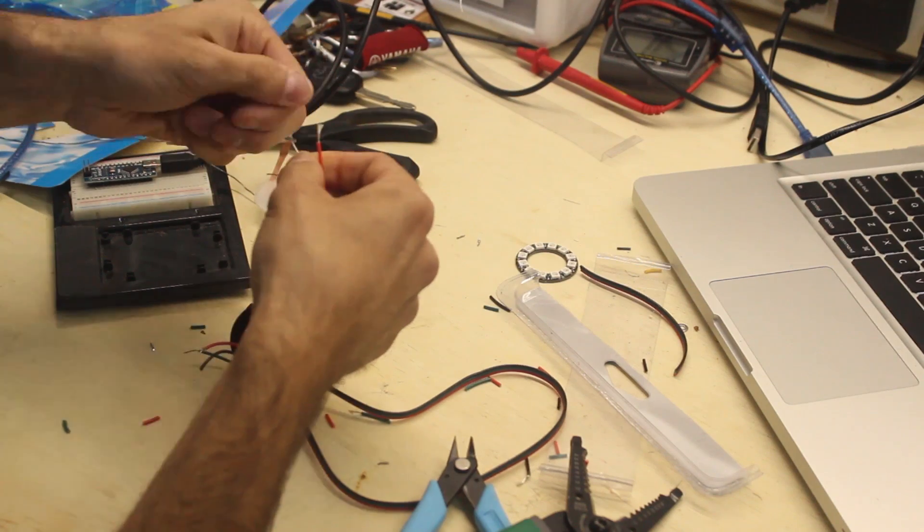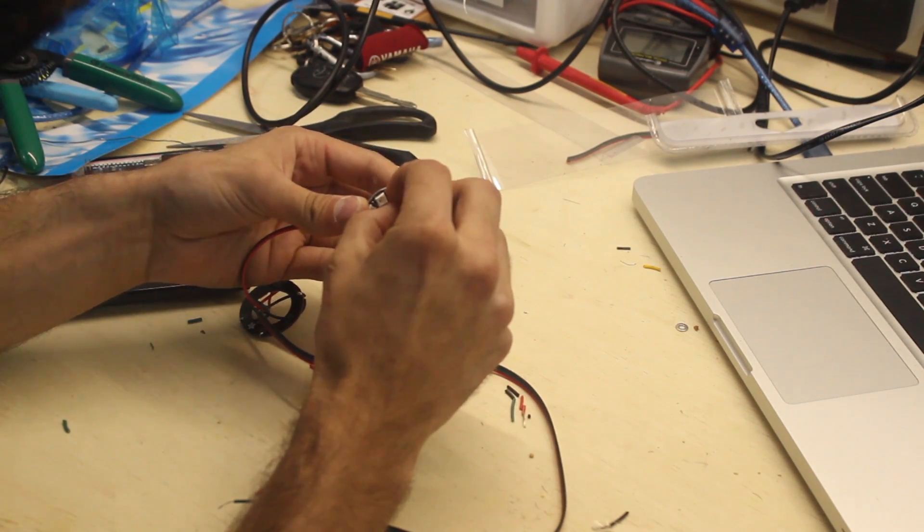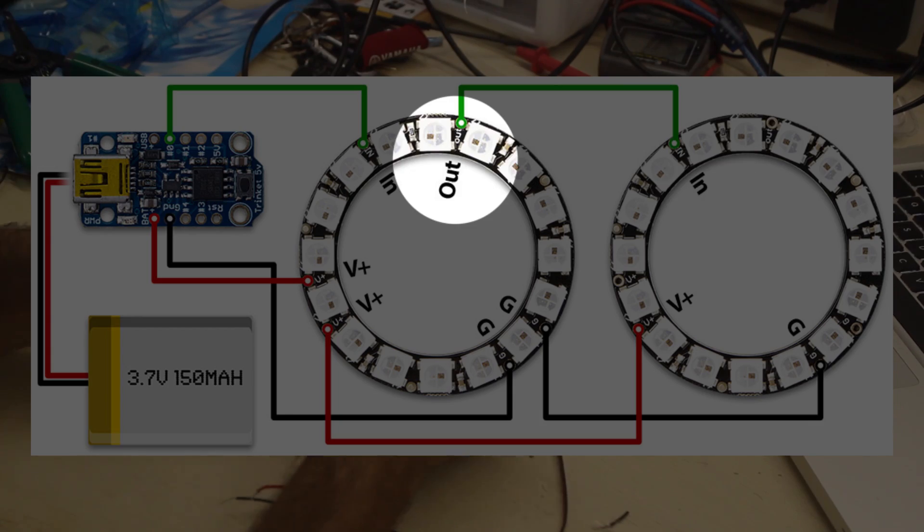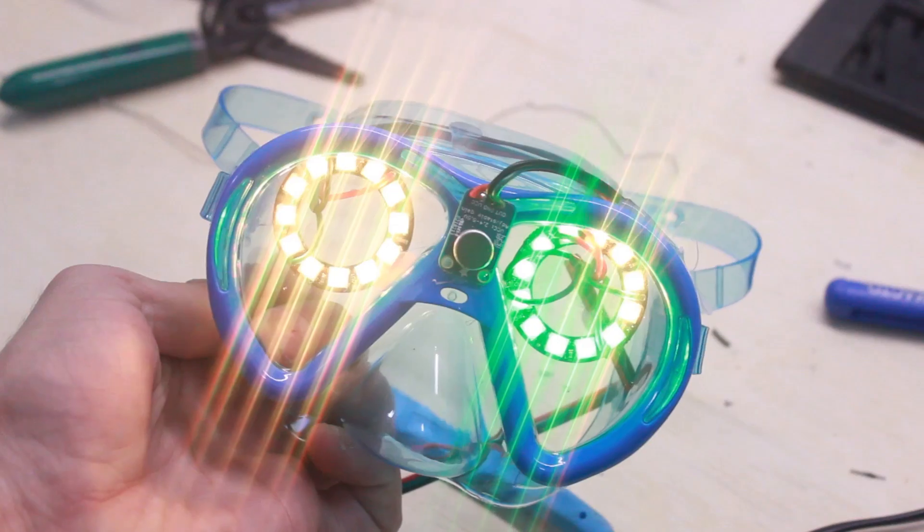Then, bring three wires over to the same contacts on the second NeoPixel ring. 5 volts and ground will be in parallel, and the data in on the second ring will come from data out on the first ring. Be sure to check out Adafruit's website for proper NeoPixel care.